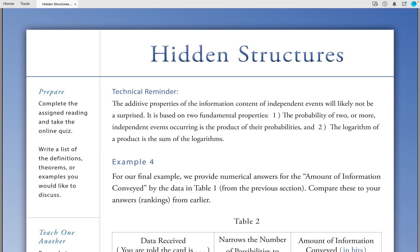Technical reminder: The additive properties of the information content of independent events will likely not be a surprise. It is based on two fundamental properties: 1) the probability of two or more independent events occurring is the product of the probabilities, and 2) the logarithm of a product is the sum of the logarithms.